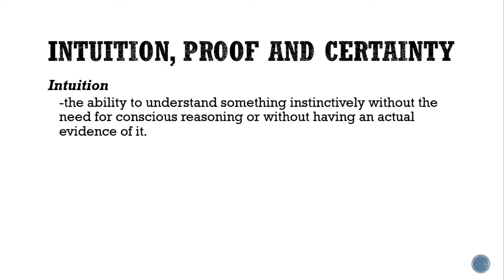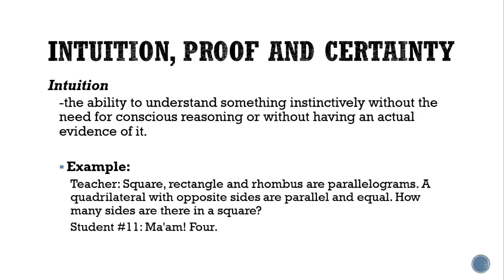For the next topic, we have intuition, proof, and certainty. Intuition is the ability to understand something instinctively without the need for conscious reasoning or without having actual evidence. It is the instinct — the first thing that comes into your mind when you are asked a question. Example: a teacher says squares, rectangles, and rhombuses are parallelograms — a quadrilateral with opposite sides parallel and equal. How many sides are there in a square? The student answers: four. We do not have to think about how many sides a quadrilateral has because we already have prior knowledge that a quadrilateral has four sides. That is intuition — instinct.